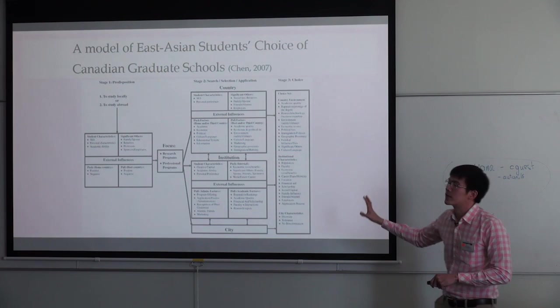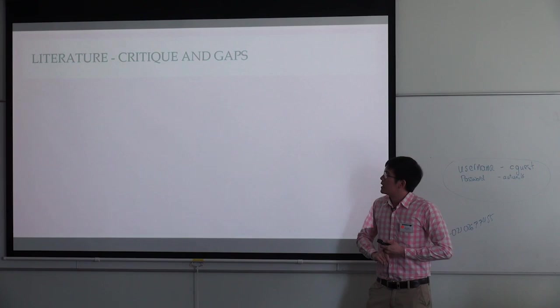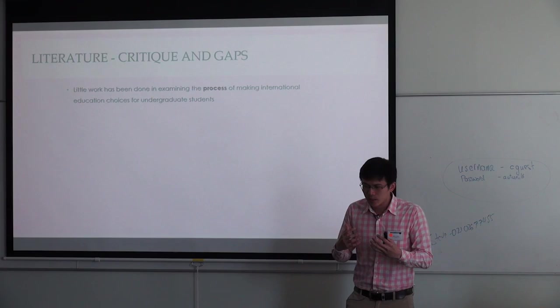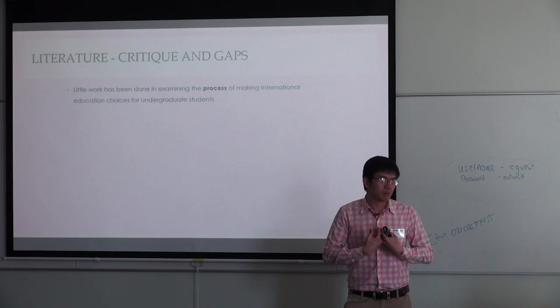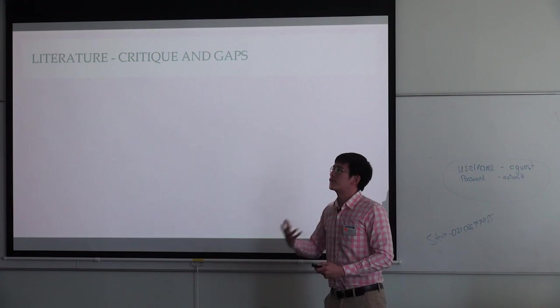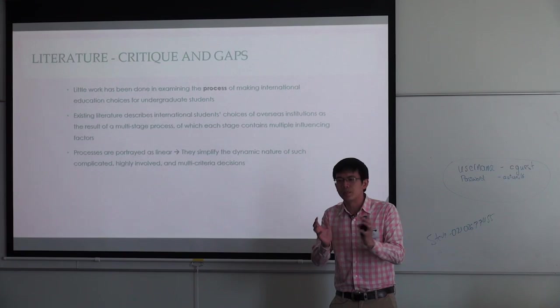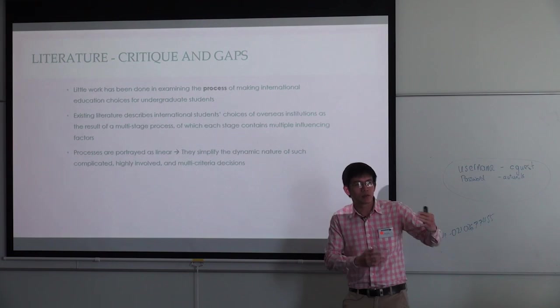So this is the current literature that I've got so far, which is very good and very detailed. But there are some gaps and critiques I've identified after reading the literature. There seems to be a lack of understanding of the undergraduate level, which is my target subject, because Chen's model focuses on postgraduate students. Undergraduate and postgraduate students may have different ideas and different experiences, so their behaviors may be different as well. Also, so far the literature describes the selection process as one-way and linear — you take certain steps, one, two, and three, and then you finish with a choice.